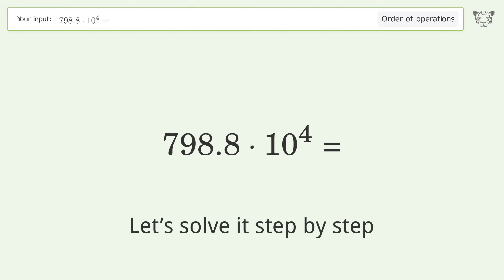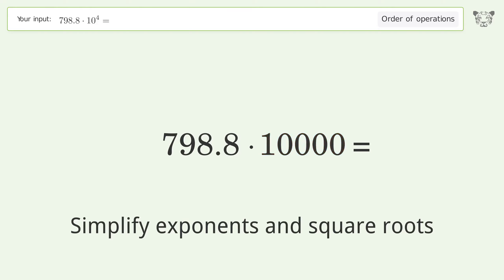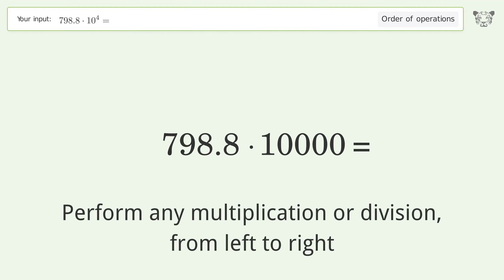Let's solve it step by step. Simplify exponents and square roots: 10 to the power of 4 equals 10,000. Then perform any multiplication or division from left to right.